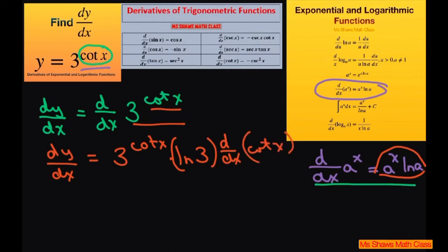So the derivative of cotangent of x is negative cosecant squared of x. So now we have this equals 3 to the cotangent of x times ln of 3, and then we're going to write times negative cosecant squared of x.